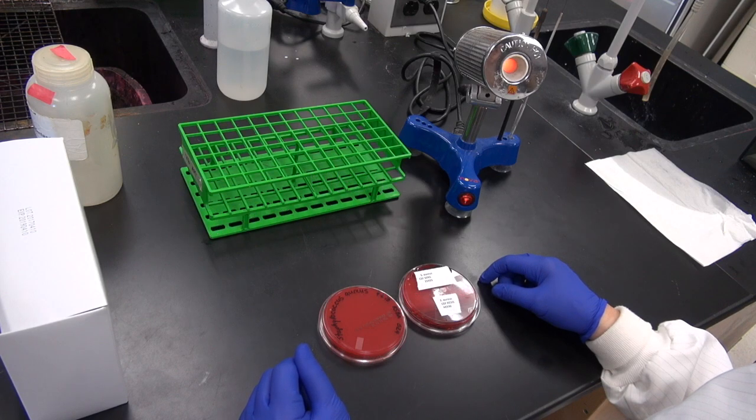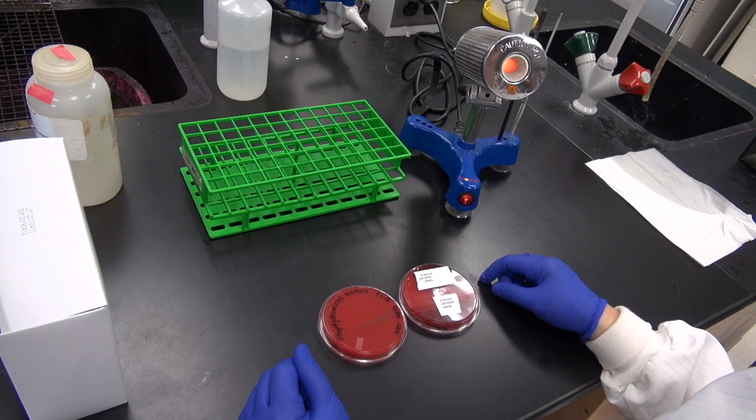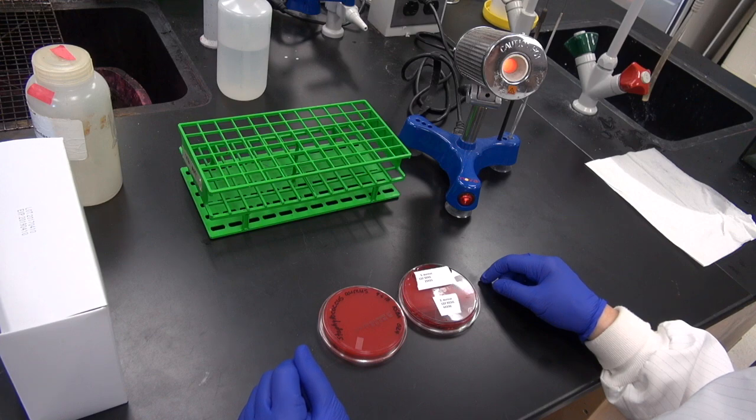For this exercise we will be transferring some bacteria from a culture plate to a new fresh blood agar plate. We will use the four quadrant streak technique to obtain isolated colonies on this new plate.